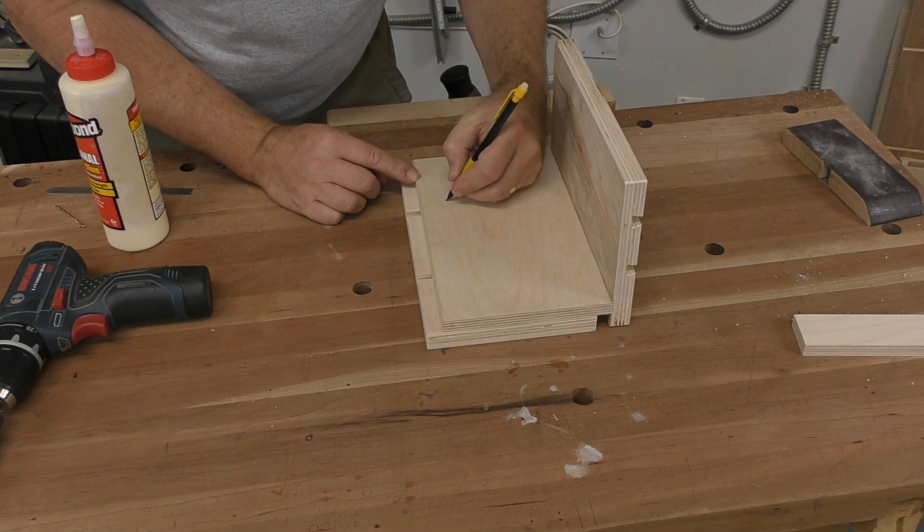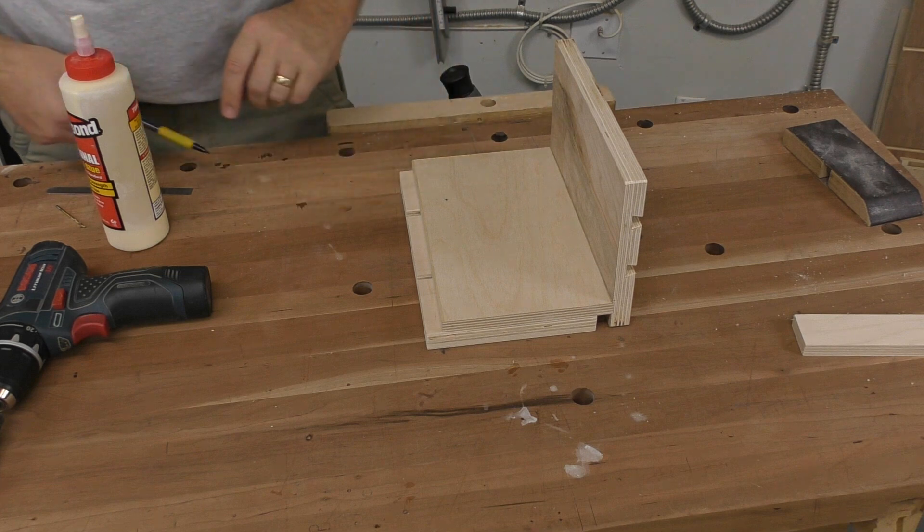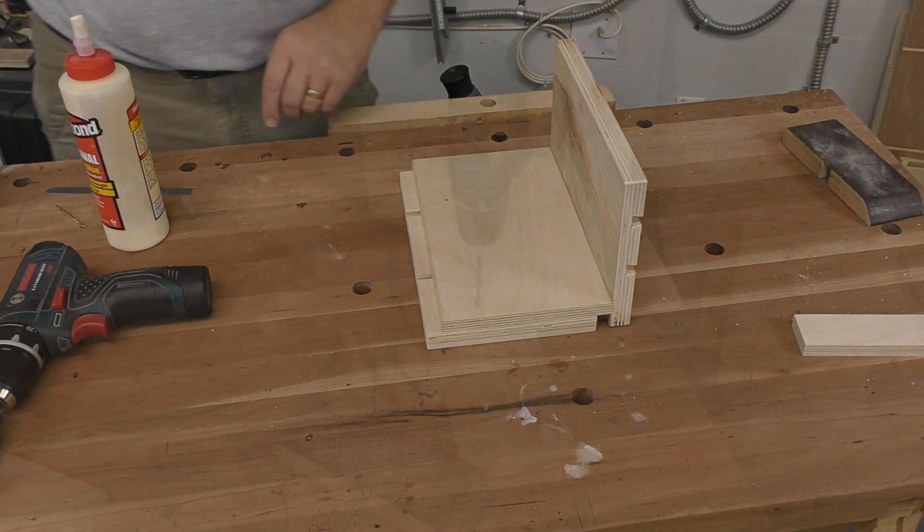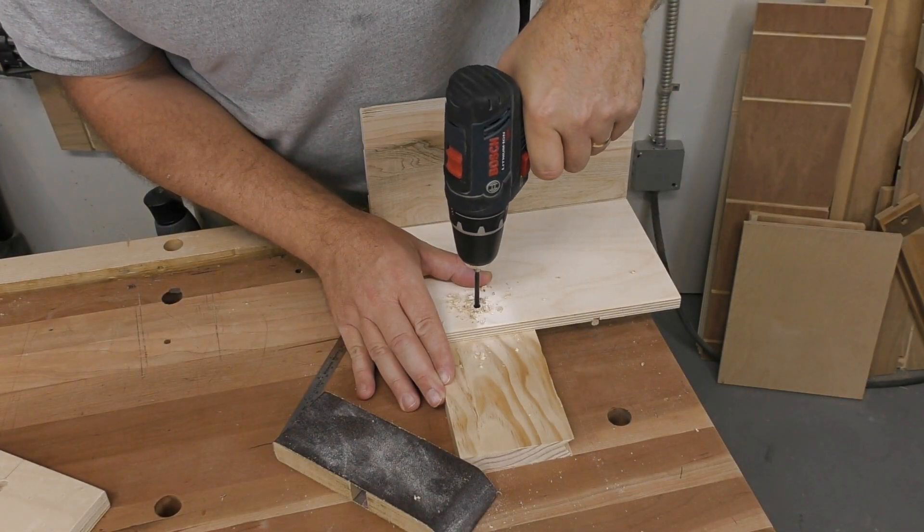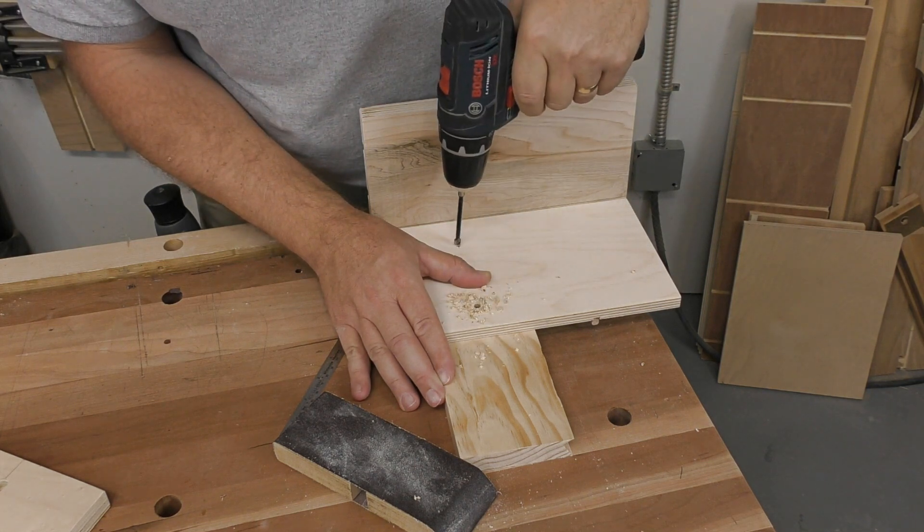Two holes are marked on the slide, centered on the dovetail groove in the base, which are then drilled through the slide using a quarter-inch bit.